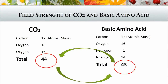That gives you your link as to why the CO2 is going to work on the plants and the body. When we look at the field strength of CO2 — which is 44 — and we do the same with the basic amino acid structure, we look at the atomic mass of carbon which is 12, oxygen 16, hydrogen 1, and nitrogen 14, giving us a total of 43. So you can see how the CO2 with the field strength of 44 links up very nicely with the field strength of your basic amino acid of 43.